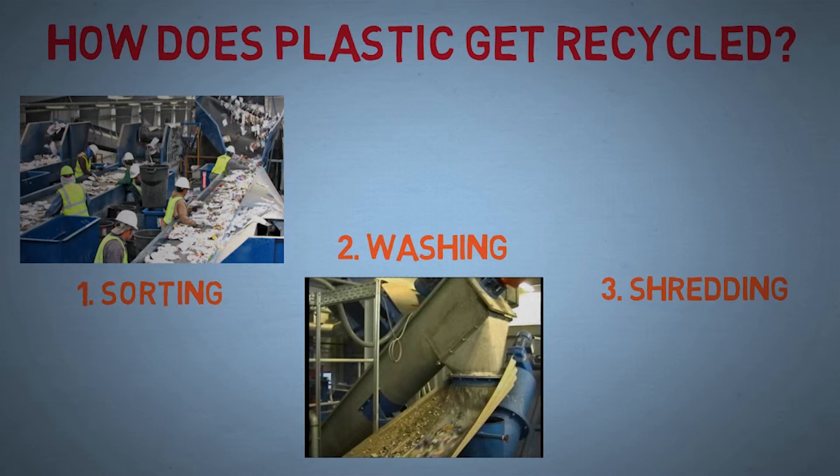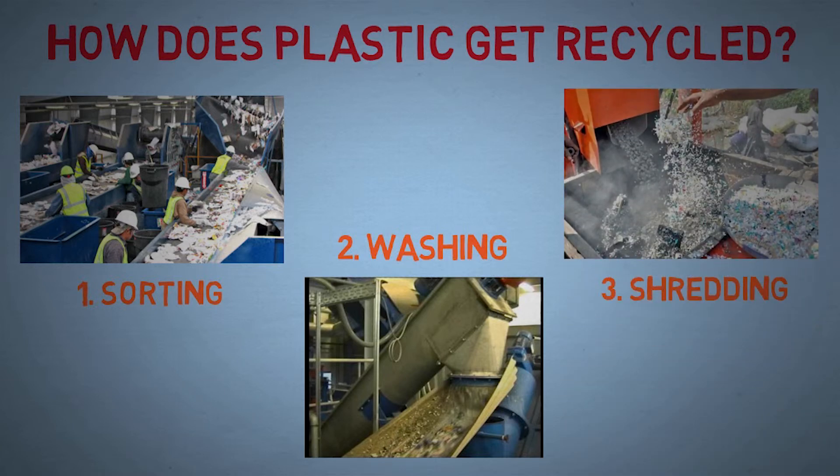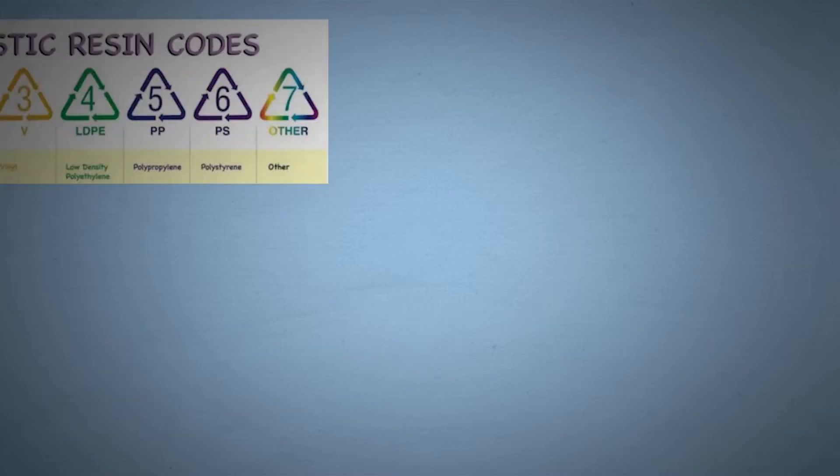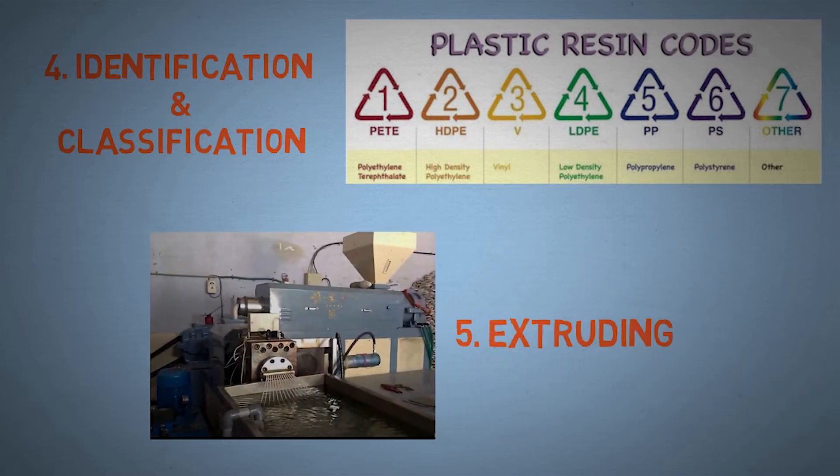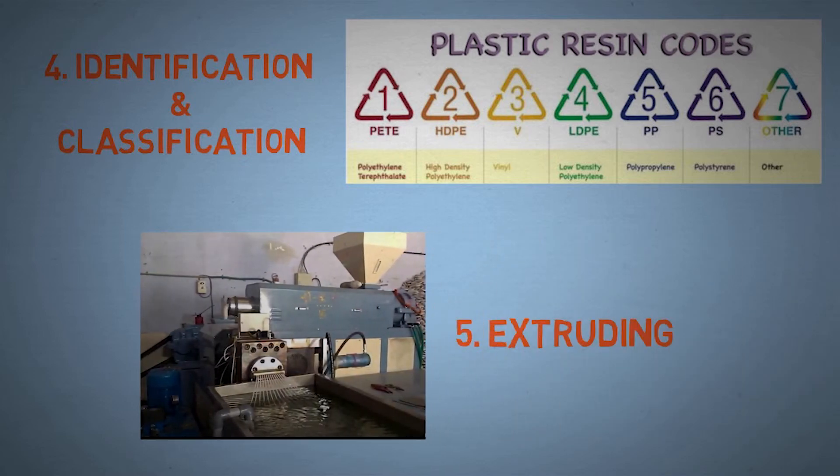Next, proper testing of the plastic is done to determine its quality and separate it into different classes. Finally, the plastics are melted so that they can be extruded into pellets which are used for making different plastic products.